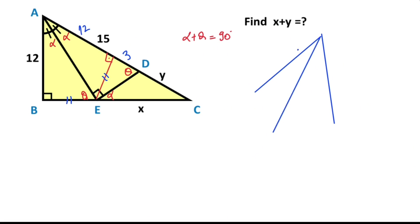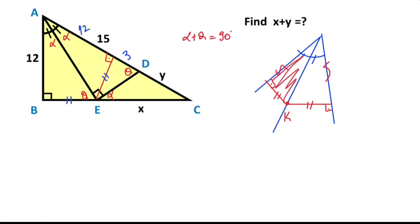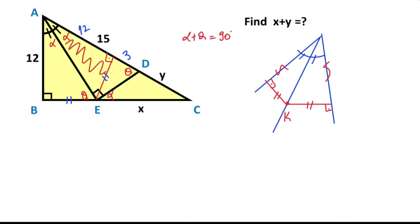Let me remind you: if we have an angle bisector line like this, let's call here point K. If we draw a perpendicular line and one more, these two parts must be equal to each other and also these two parts are equal to each other. As a result, this triangle and this triangle are congruent.